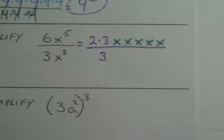Number five. Simplify this expression here. I'm just going to expand everything out. So if I expand this out, that's two times three and then five x's. On the bottom, I have a three. And it looks like I have three x's. x to the third.